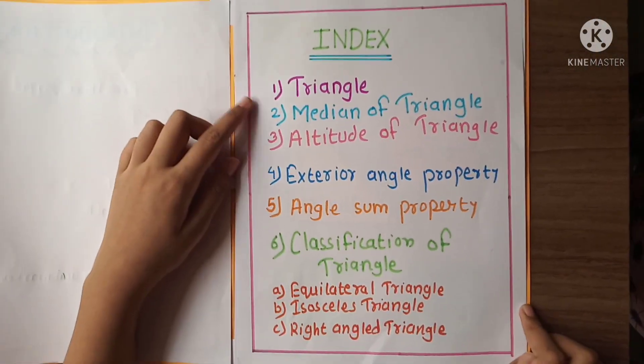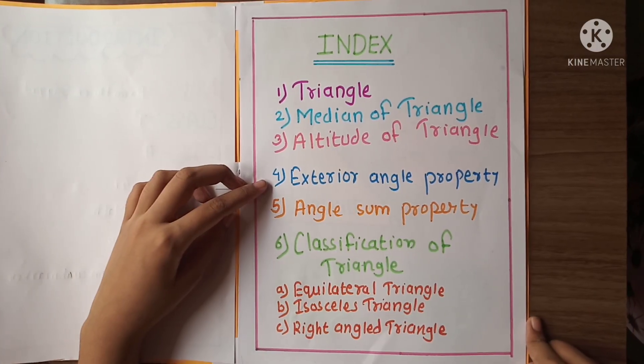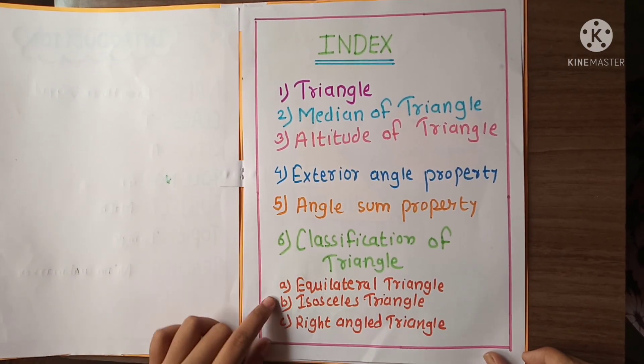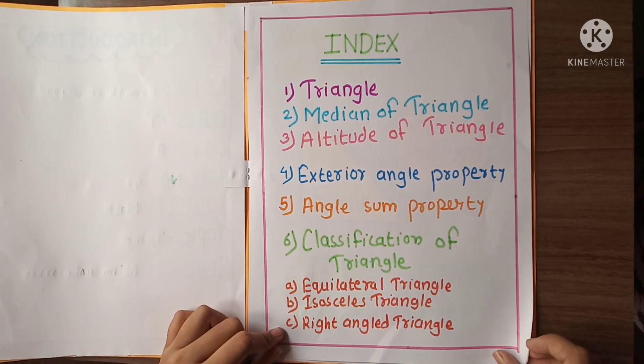Here is the index: triangle, median of a triangle, altitude of a triangle, exterior angle property, angle sum property, classification of triangle - number a equilateral triangle, number b isosceles triangle and number c right angle triangle.